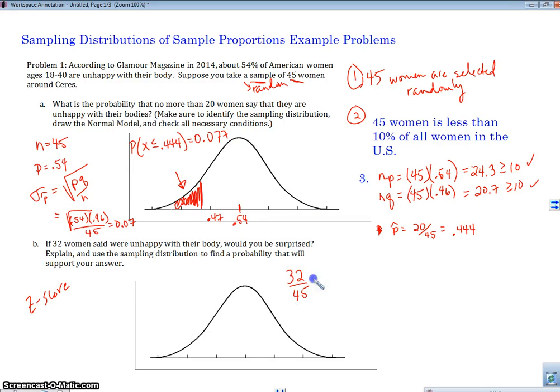32 out of 45. So we're going to do 32 out of 45. And we're going to get 71.1%. So 0.711. And we're going to figure out the Z-score. And remember that Z is X minus mu over sigma.